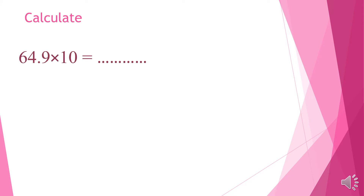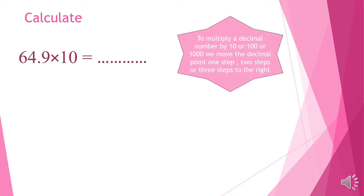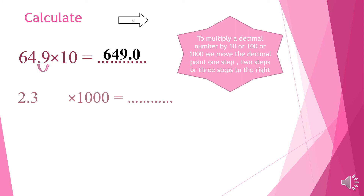Calculate 64.9 times 10. To multiply any number by 10, we have to move the point one step to the right side. To multiply a decimal number by 10, 100, or 1000, we move the decimal point one step, two steps, or three steps to the right. Here we have times 10 — we have one zero beside the one — so we move the point one step to the right side. It will be 649.0.